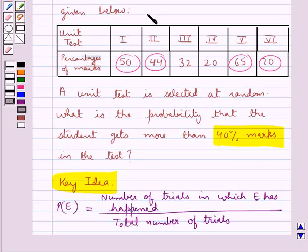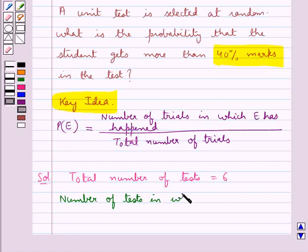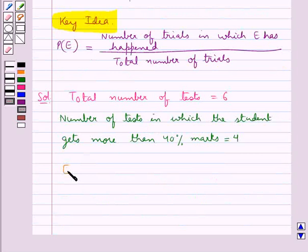That is in unit test 1, in unit test 2, in unit test 5, and in unit test 6. So now the number of tests in which the student gets more than 40% marks is equal to 4.